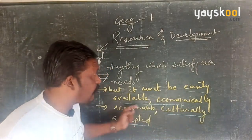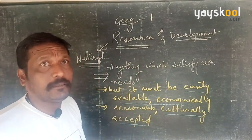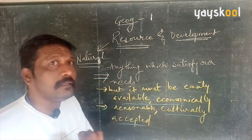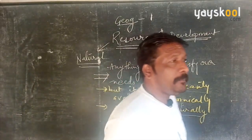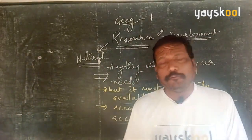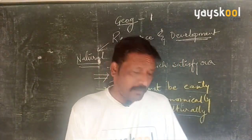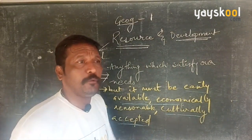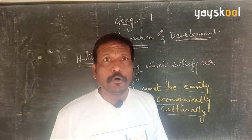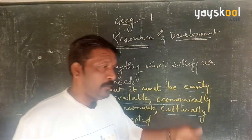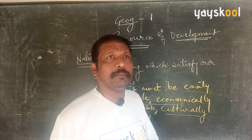Something must satisfy the needs of a person in order to be a resource. If it does not satisfy a need, it cannot become a resource. For example, if you dig the soil, you might get gold — but what matters is whether it fulfills your need under the stated conditions.